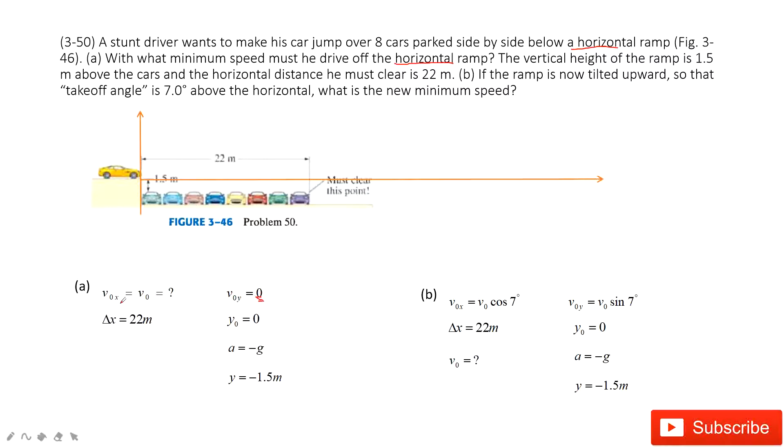To find initial velocity, we just need to find the initial velocity at x component. The horizontal distance is 22 meters, so the displacement at x component is 22. We set the reference point as initial, so the initial position at y component is 0. For projectile motion, acceleration is negative g pointing down due to gravity. The vertical height of the ramp is 1.5 meters.